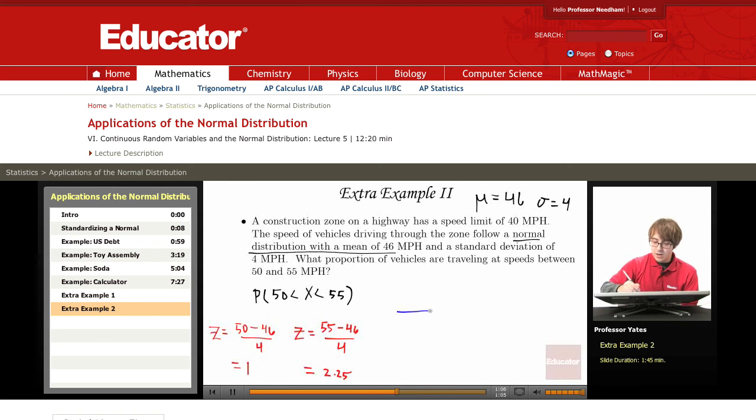So drawing out my density curve, I'm centered at 0 here. I'm looking at 1, I'm looking at 2.25, and I want the area between those two values. So I look up 2.25 first.